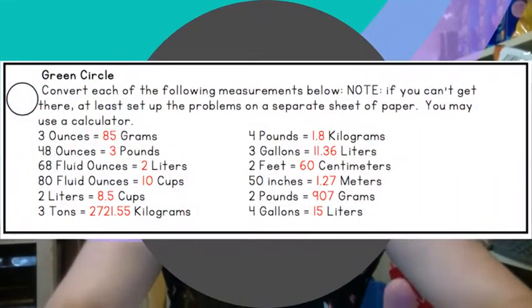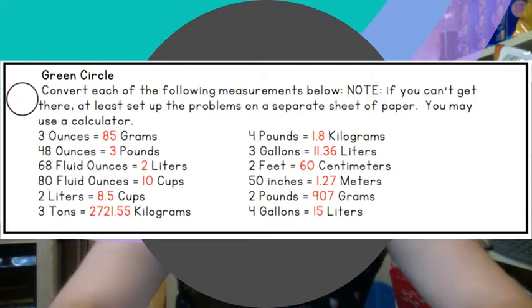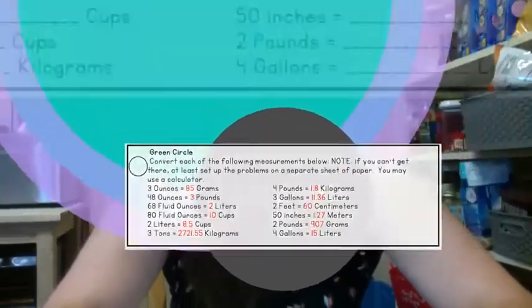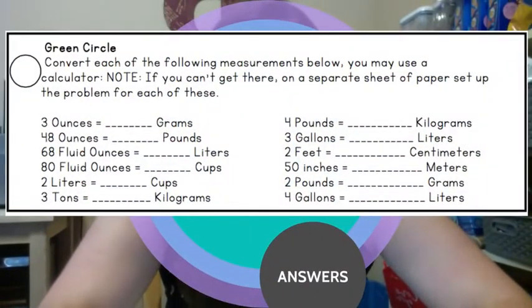I see here, three ounces is equal to, it says 85. It should be 84 grams, right? Yeah, I totally wrote that answer key, but I'm wrong. It should be 84.